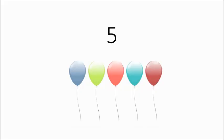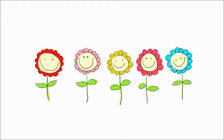Now children, you can see some pictures and count them. So children, this is number 5. And how many balloons do we see? There are 5 balloons. Here we have 5 flowers. And you can count the stars — there are 5 stars.